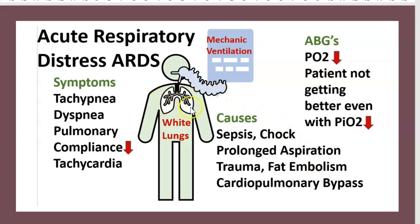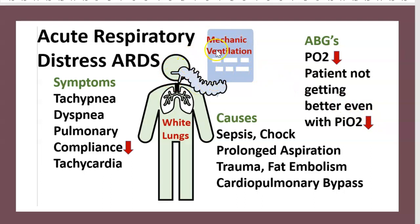There is a white lung on the X-ray. ABG PO2 is decreased. The patient is not getting better even with high FiO2. The patient is connected to mechanical ventilation.